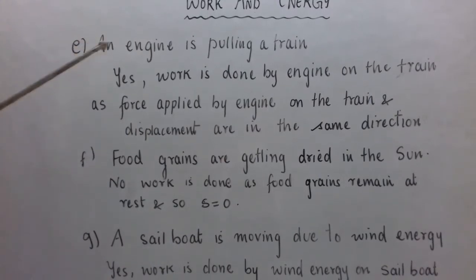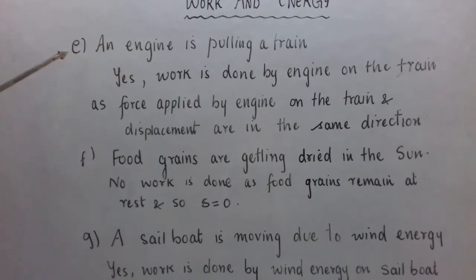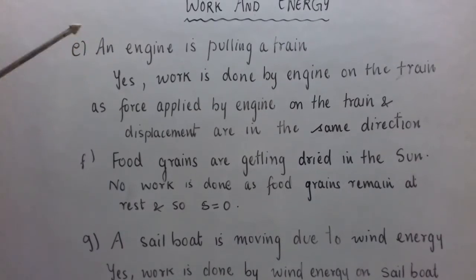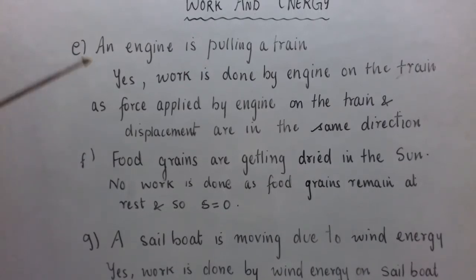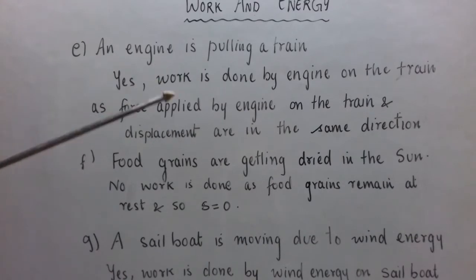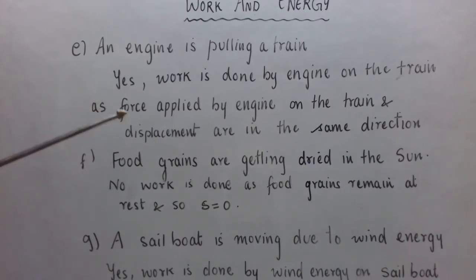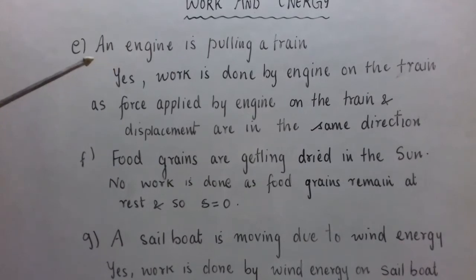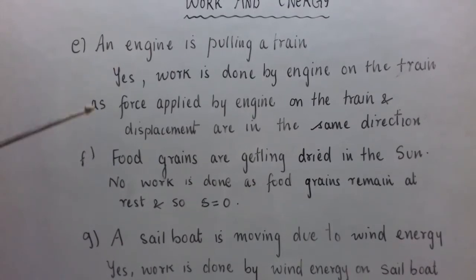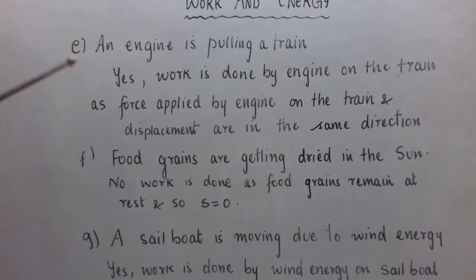Part E: An engine is pulling a train — is work done or not? When an engine pulls a train, it does work against the force of friction. Yes, work is done by the engine on the train, as the force applied by the engine on the train and the displacement are in the same direction. The engine applies a force in the direction of motion, and the train moves in the same direction. Work is also done against the force of friction.